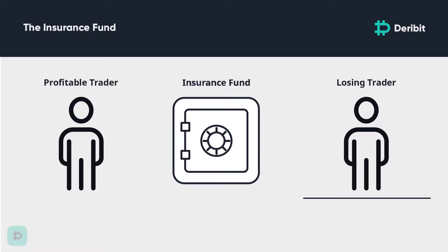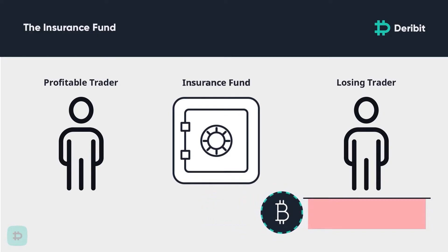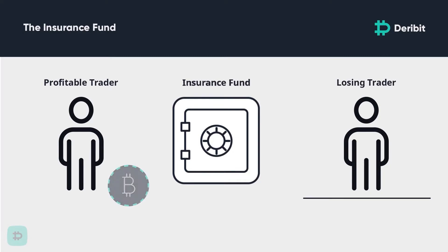When trading with some traditional brokers, if the account goes into negative equity — i.e. you lose more than you had deposited — you still owe this money and you will be chased for it, up to and including legal action. On Deribit, this is not the case. While your account may go into negative equity, the insurance fund will be used to set your account equity back to zero. In this sense, the insurance fund system provides negative balance protection for traders that get liquidated, and ensures the person on the other side of the trade still gets paid.